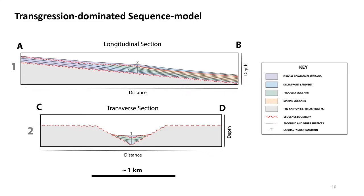Our interpretation of the facies within each sequence of the basal Wanaka canyon fill was that the basal conglomerate sands of each sequence were fluvial and transitioned into delta front and pro-delta sand and silt event layers — namely hyperpycnites. From this we determined a transgression-dominated sequence model for the Wanaka Canyons, with the basal fill composed of up to nine fluvial to deltaic sequences, later transgressed by marine silt and sand in the upper Wanaka canyon.